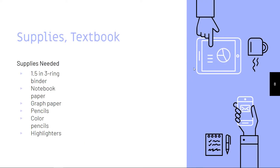For supplies, these are suggested recommendations. Miss Pierce hasn't specified exactly what you need, but this is what I use in my classroom. I highly recommend a one-and-a-half inch three-ring binder, notebook paper, graph paper for the notes and graphs you'll create, pencils, colored pencils, and highlighters — all come in handy.